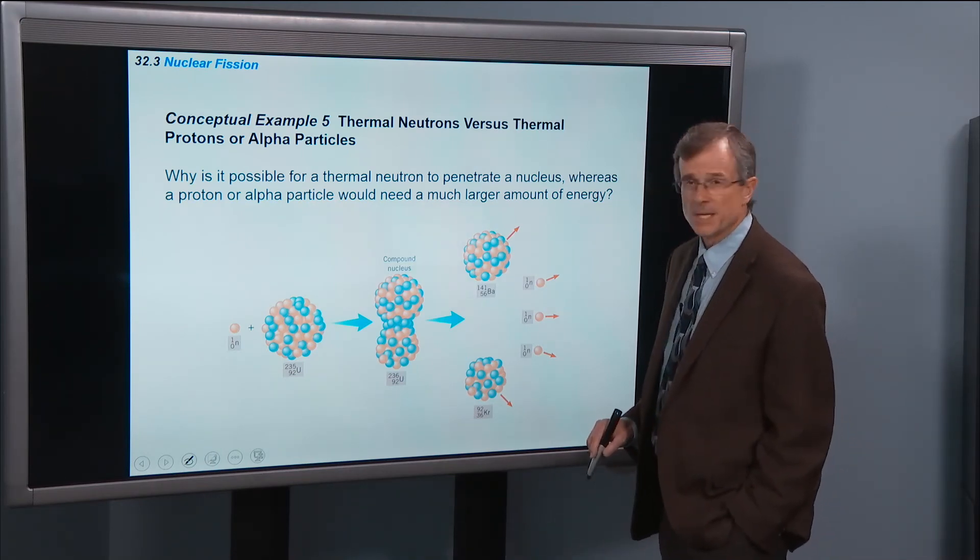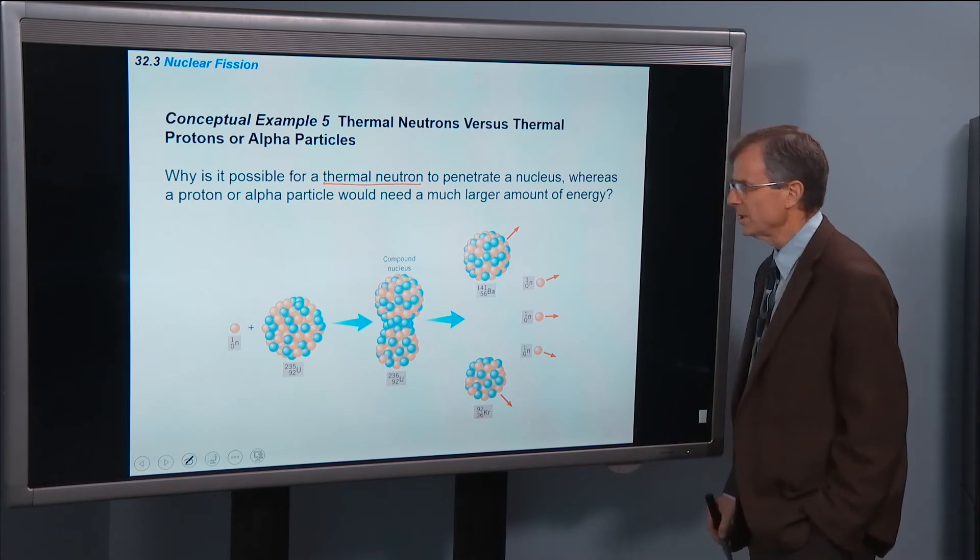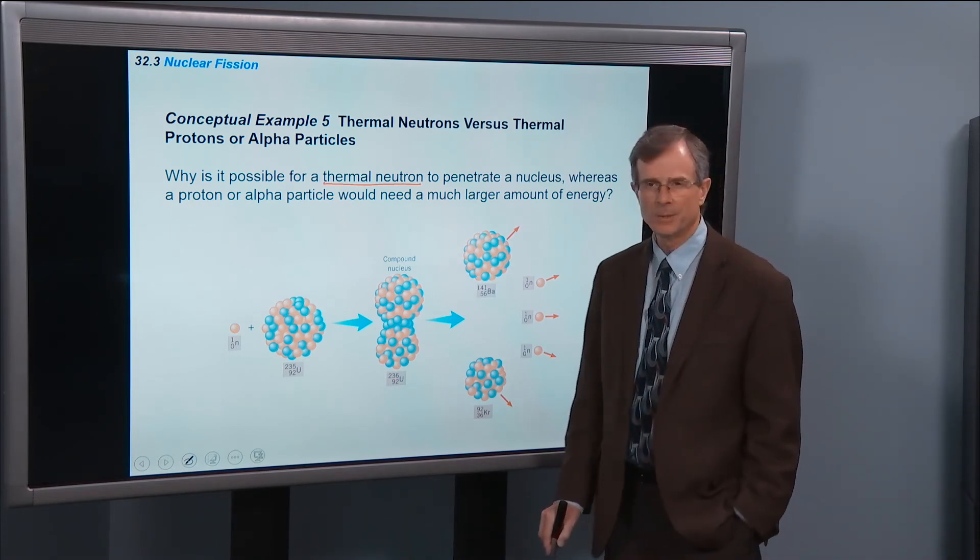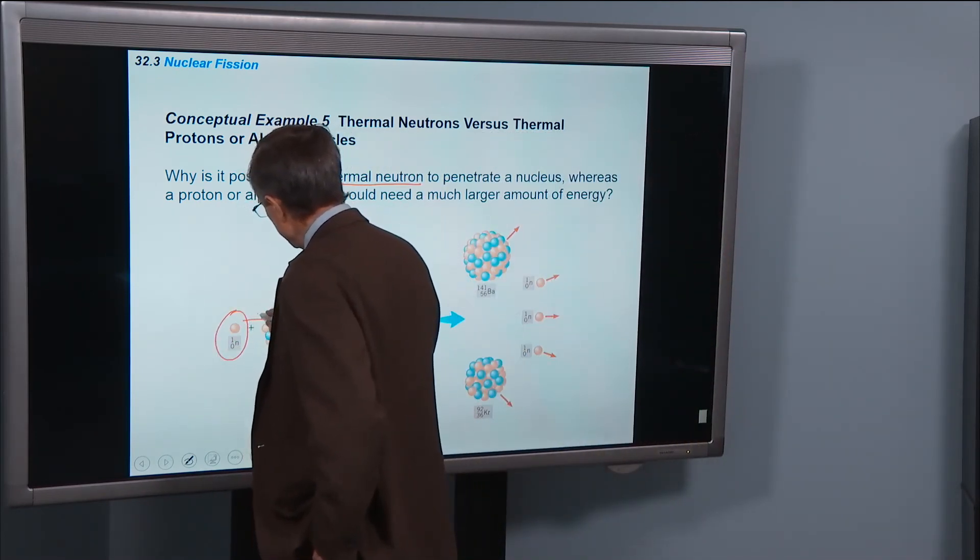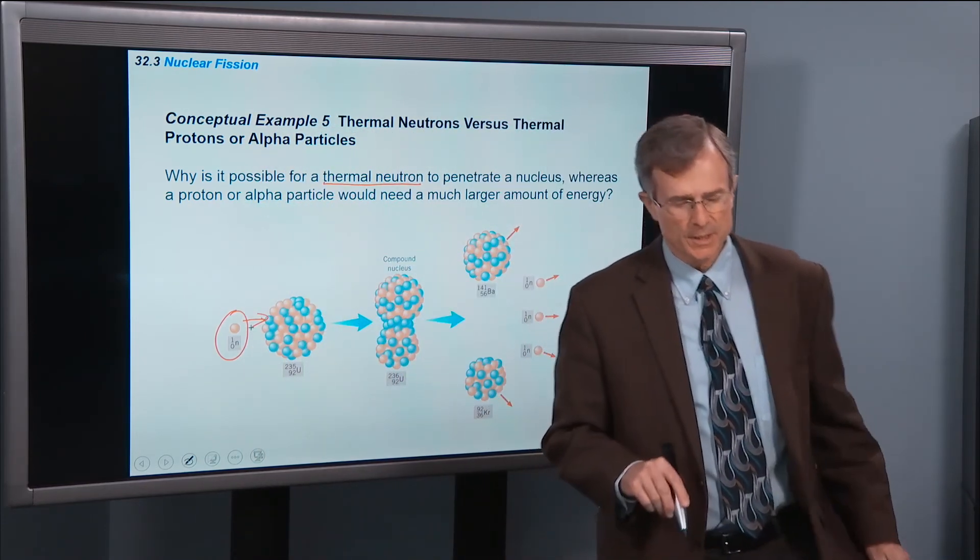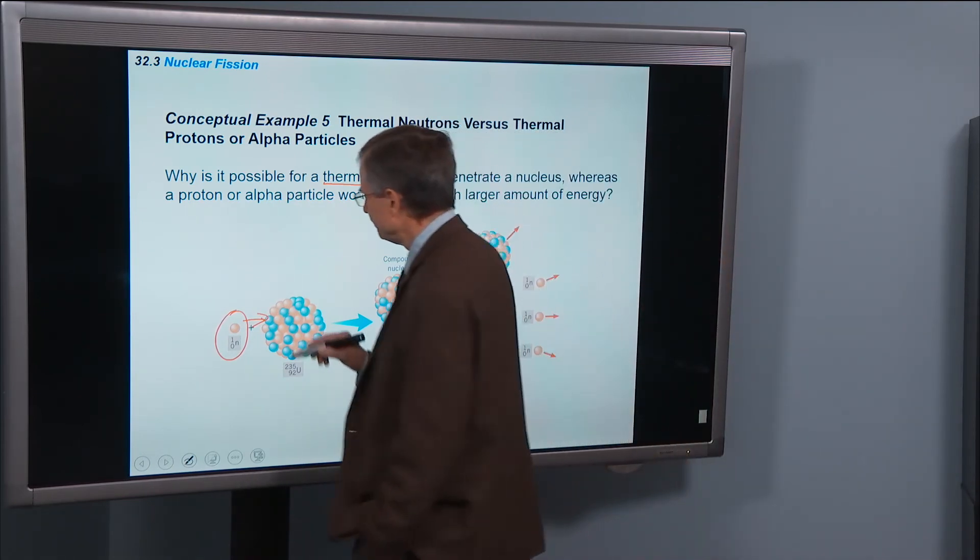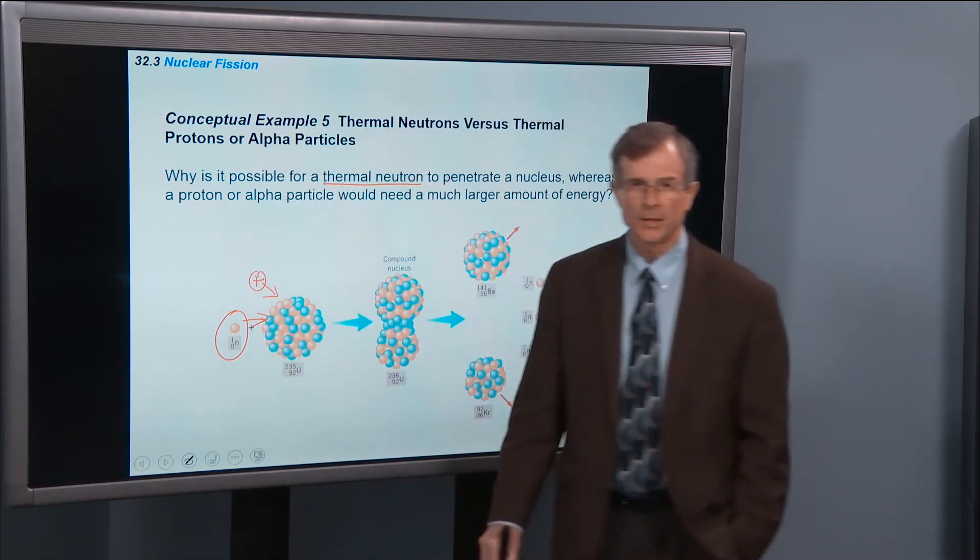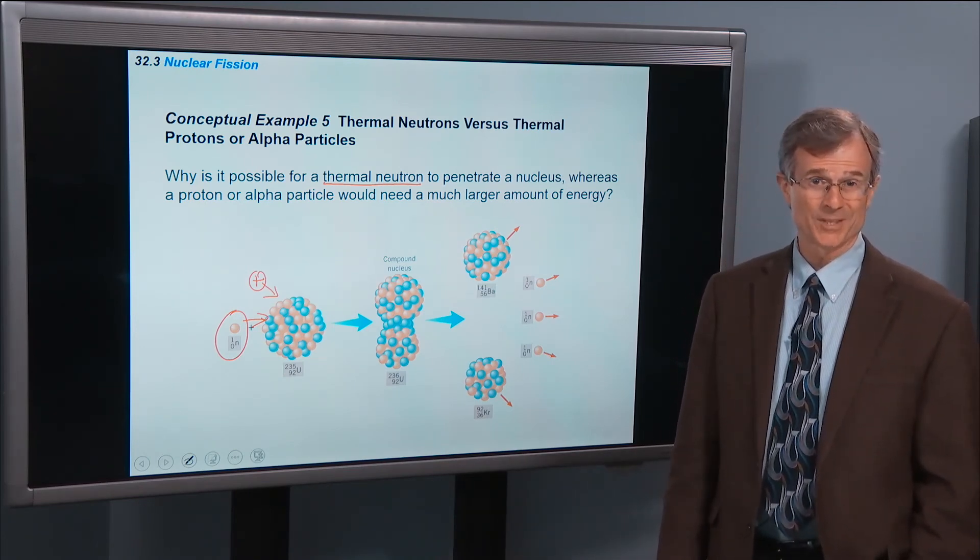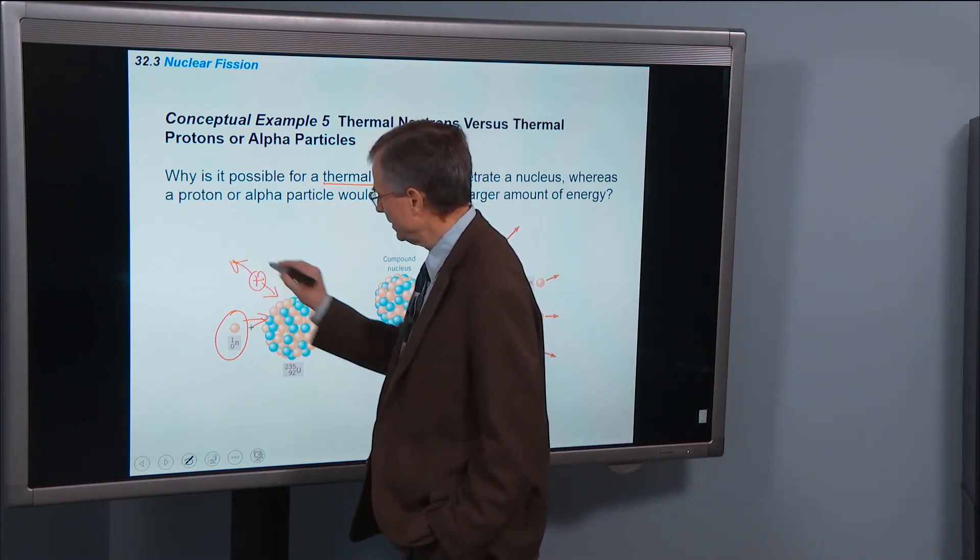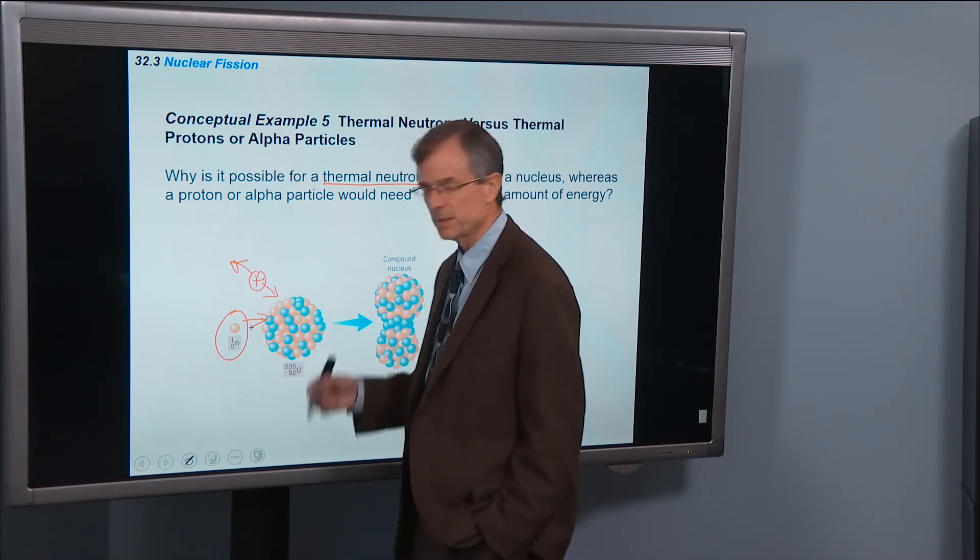So this conceptual example is to ask the question, why is it possible for a thermal neutron, a slowly moving neutron, to penetrate a nucleus, whereas a proton or an alpha particle would need a much larger amount of energy? Well, take a proton. It's positively charged, and you head that toward that nucleus, what's going to happen? The nucleus is also positively charged, and so there's a repulsion of that proton from this positively charged nucleus. It doesn't want to go near that hugely positively charged nucleus. So you have to give this proton a whole lot more energy than you would have for a neutron.